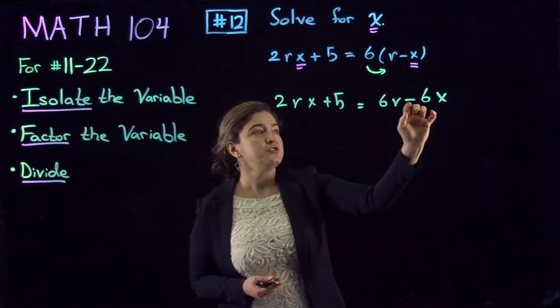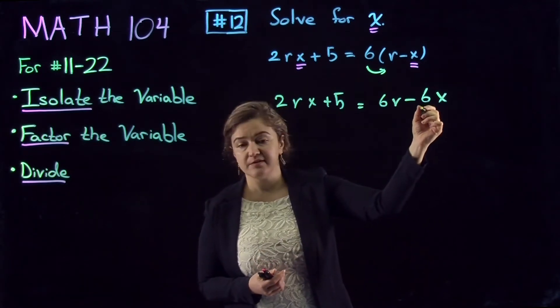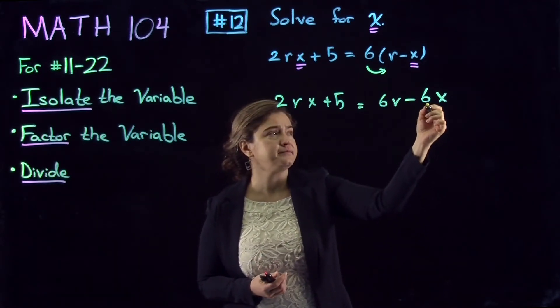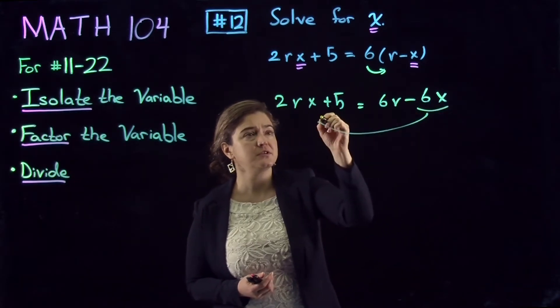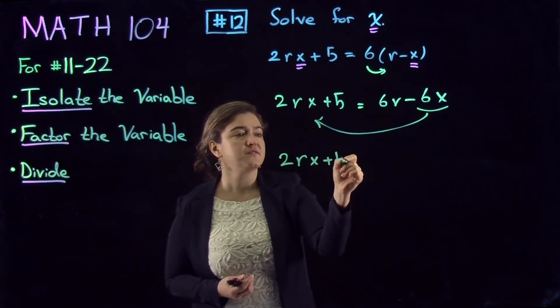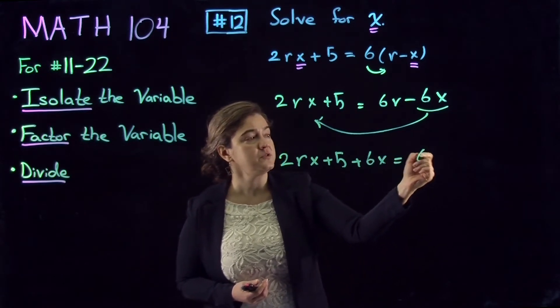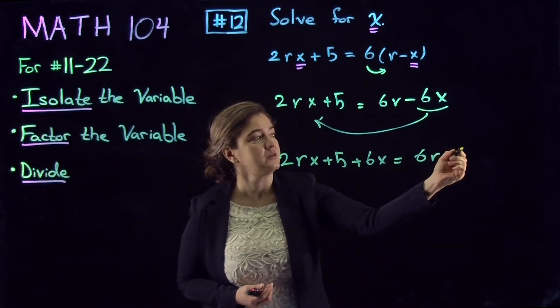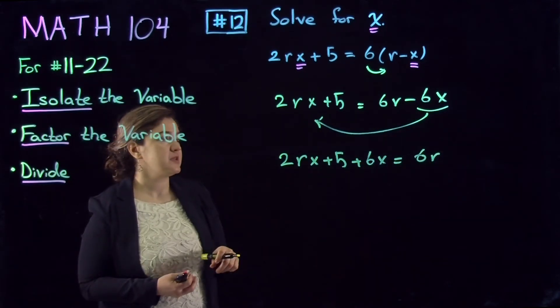Here I'm going to add 6X to both sides of the equation. So it simplifies on this side and goes to the other one. It becomes 2RX plus 5 plus 6X equals 6R minus 6X plus 6X becomes 0.